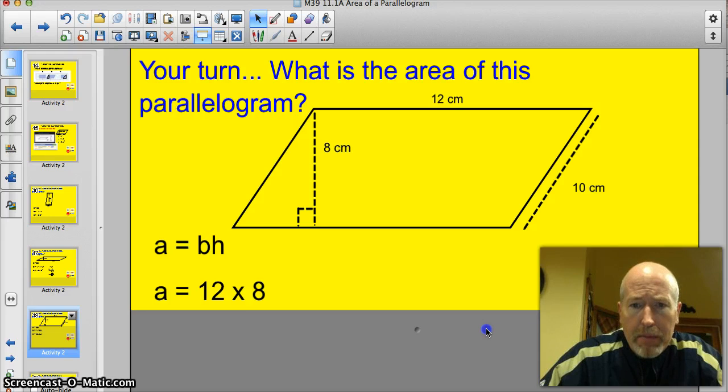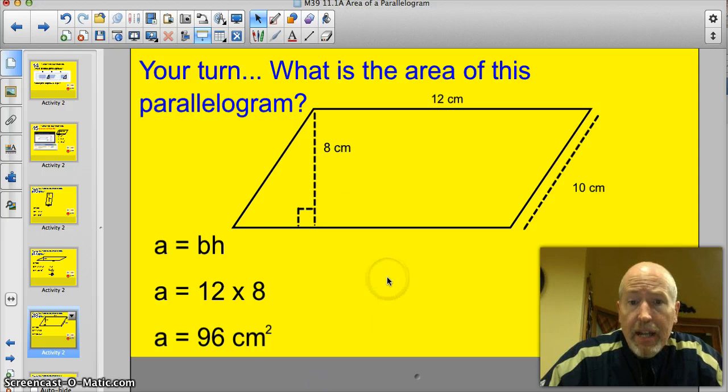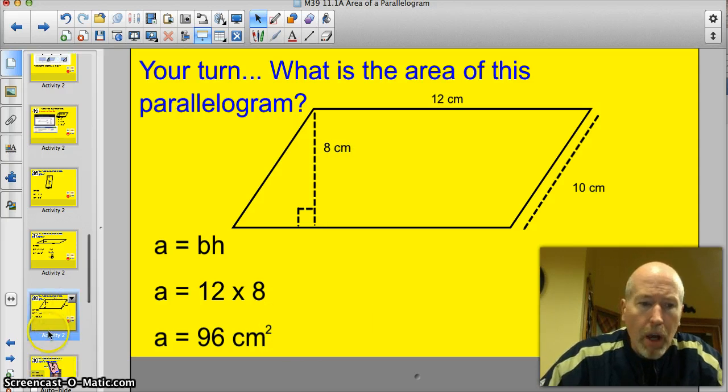All right. So area is base times height. So the base is 12. Height is 8. 96 centimeters squared. I hope you got that one right.